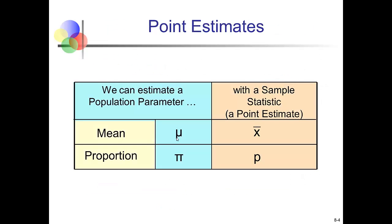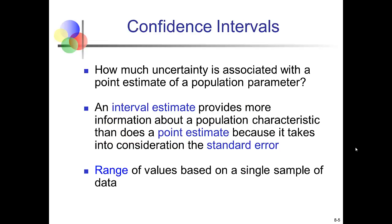We could estimate the population parameter mu by calculating a sample mean, x bar. We could also estimate a population proportion, pi, by calculating a sample proportion, p. The confidence interval includes uncertainty associated with the point estimate, so instead of getting exactly a particular point, we get a range of values—that's why we call it a confidence interval. It takes into consideration the standard error.